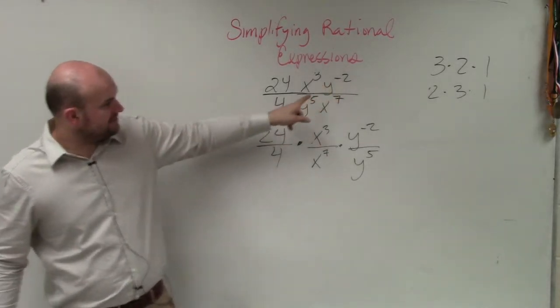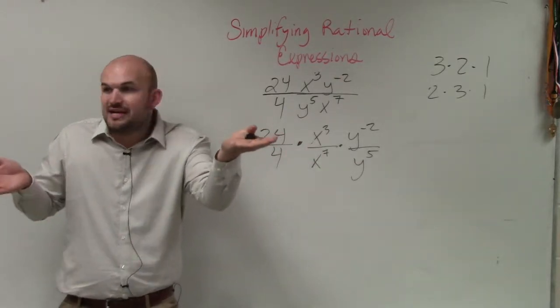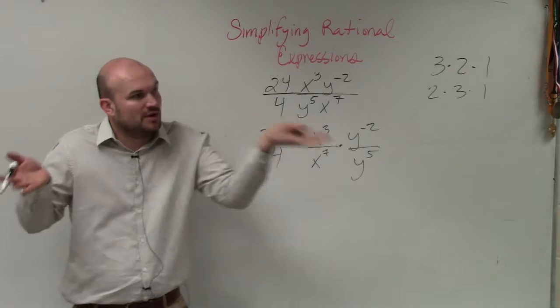That's y to the negative 2nd divided by y to the 5th. You just write the x's with the x's, because remember what Crystal said? She asked, can you do them when they're different? What if there was a 3 and a 2?